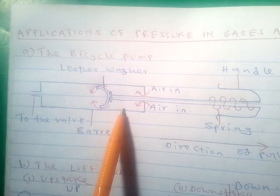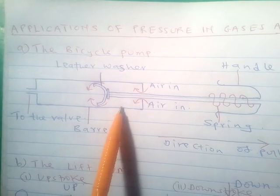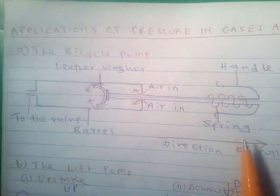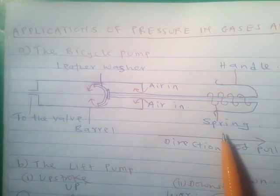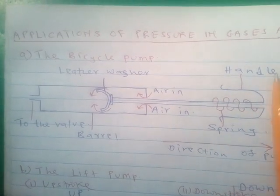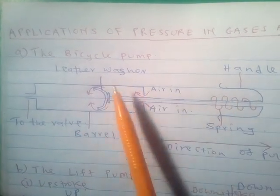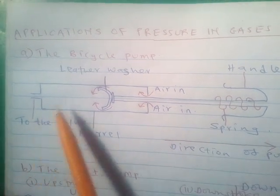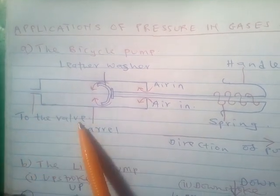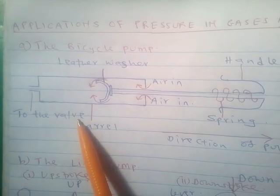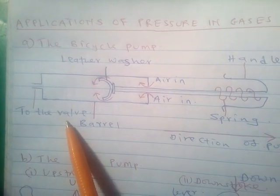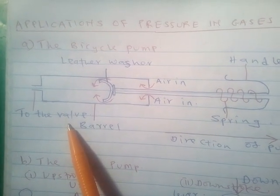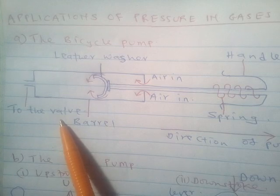Here is a typical diagram of a bicycle pump. You need to know its parts: we have the spring, the handle, the leather washer, the barrel, and the connection to the valve — which connects to the valve of the tire to be filled with air.